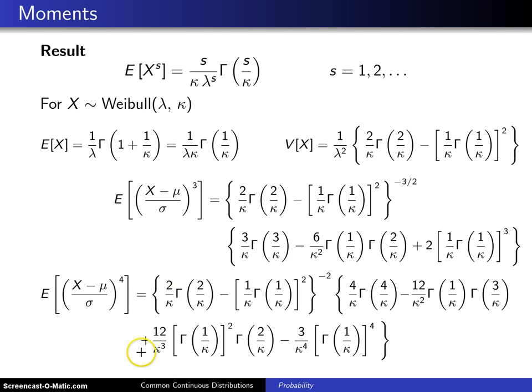And if you want to crank it all the way up to the population kurtosis, you get all of these. Again, complicated, and they involve the gamma function, but they can be computed.